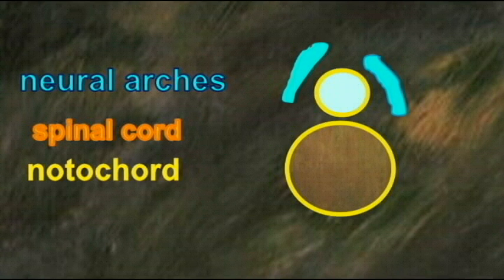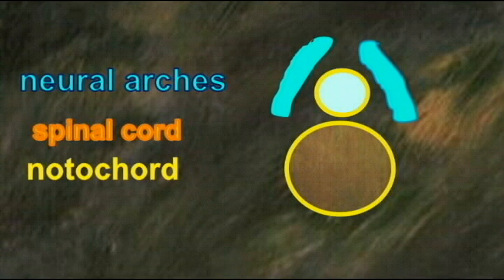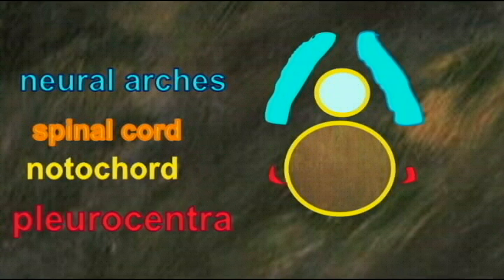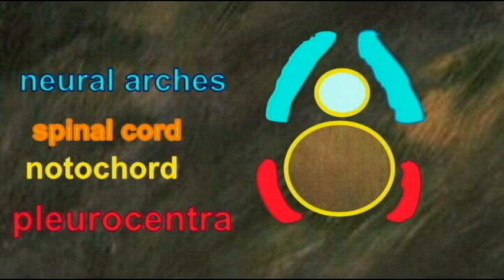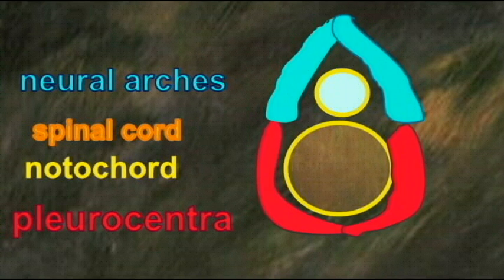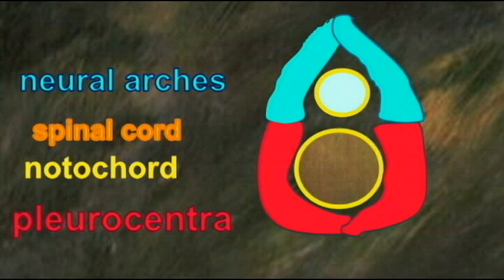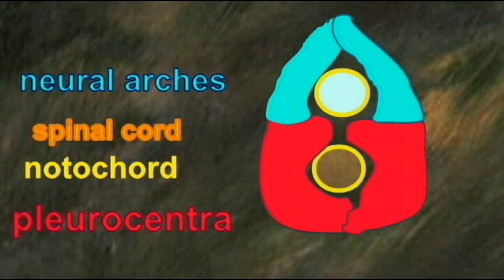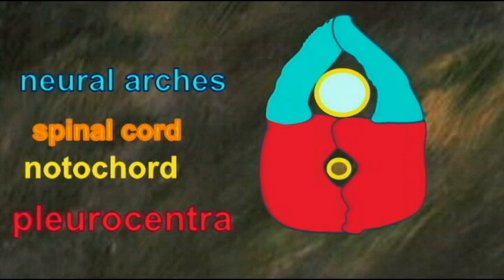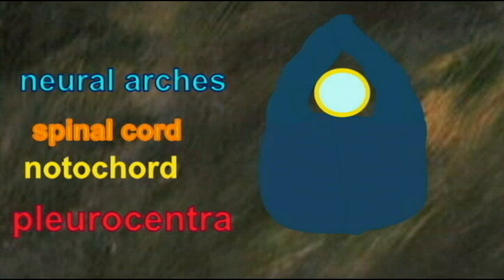But later they began to replace the notochord as they fused. They were converted into bone, and these solid structures then became composite vertebrae, in that they were composed of separate bony elements originally: the neural arches, the pleurocentra, and the intercentra.